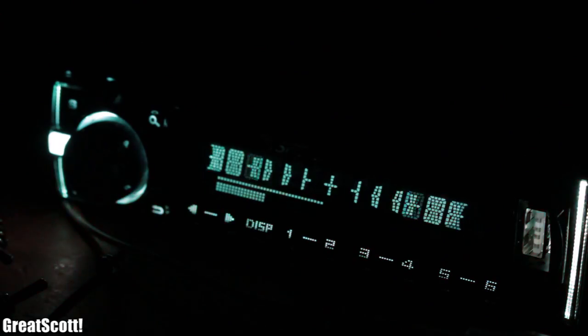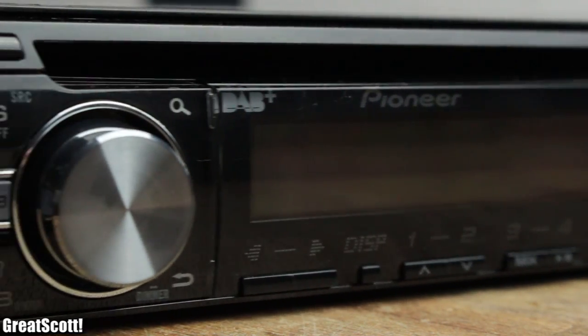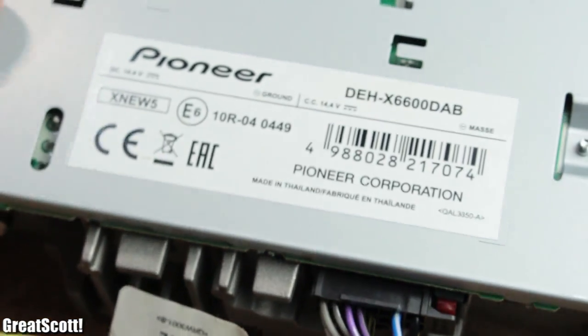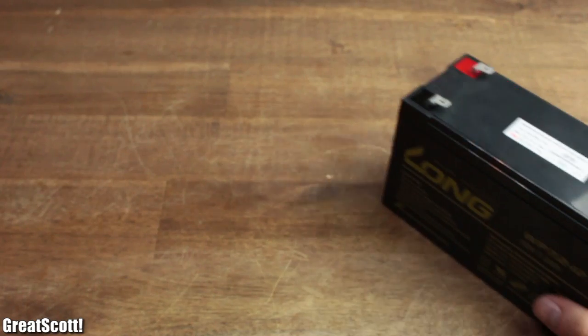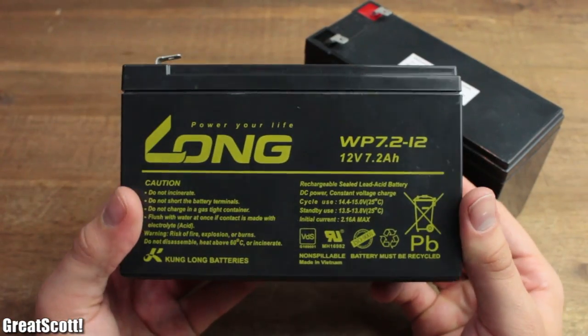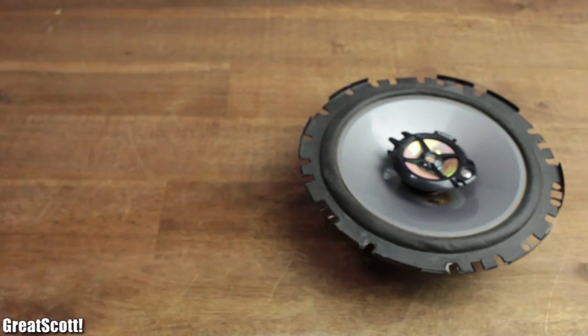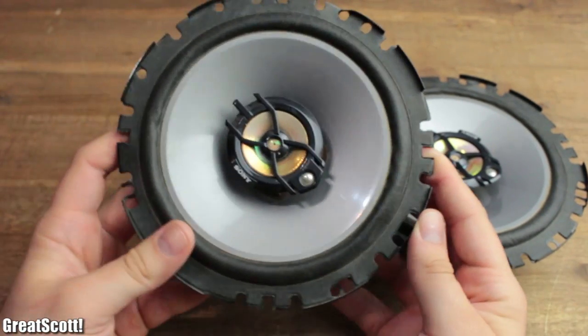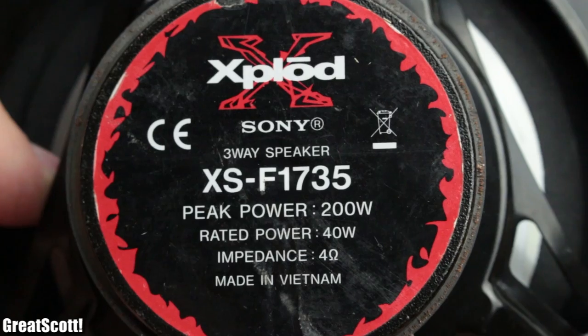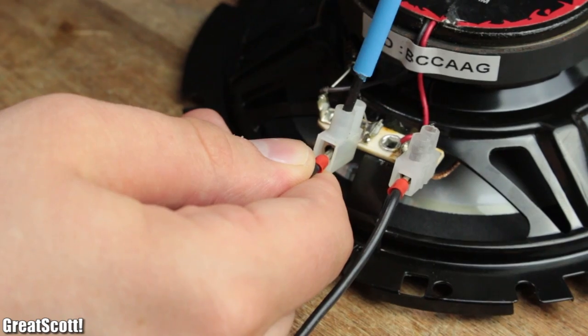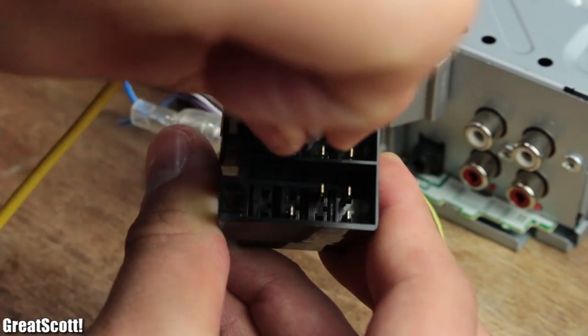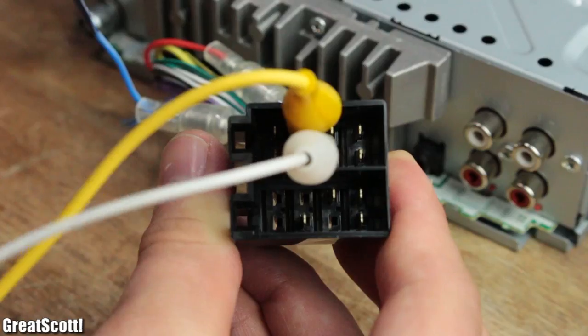The heart of the new system is this Pioneer DEH-X6600 DAB car radio, which will be powered by two 12-volt 7.2 amp-hour lead-acid batteries. For the actual sound playback, I will be using those salvaged 17-centimeter 40-watt speakers. I connected one of them to pin B3 and B4 of the car radio plug according to its standardized pinout for first test run.